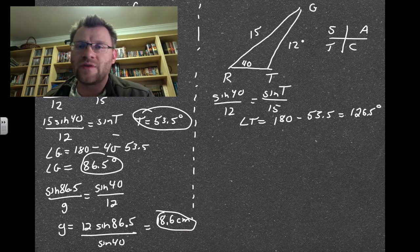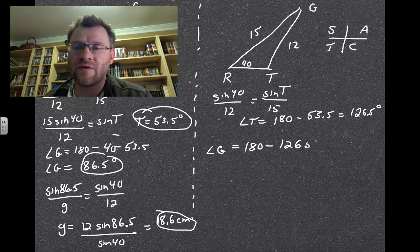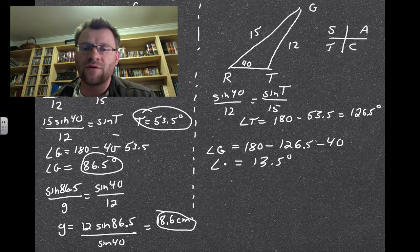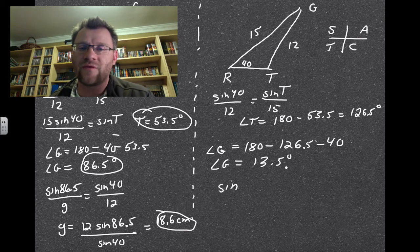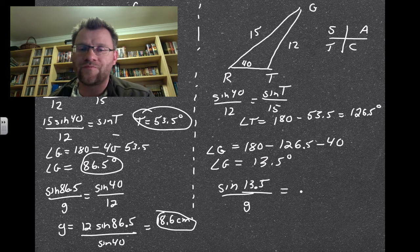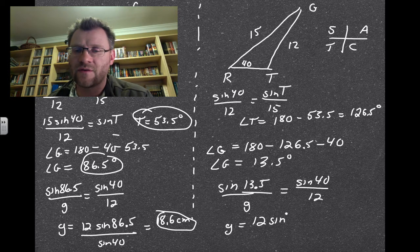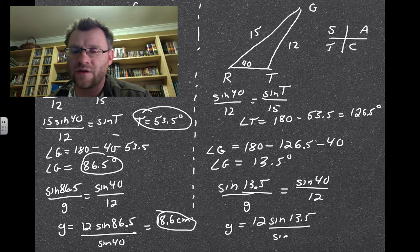With angle T equal to 126.5 degrees, angle G equals 180 minus 126.5 minus 40, giving angle G equal to 13.5 degrees. Using the law of sines to find side G: sine 13.5 over G equals sine 40 over 12. Rearranging: G equals 12 sine 13.5 divided by sine 40, giving side G equal to 4.4 centimeters.